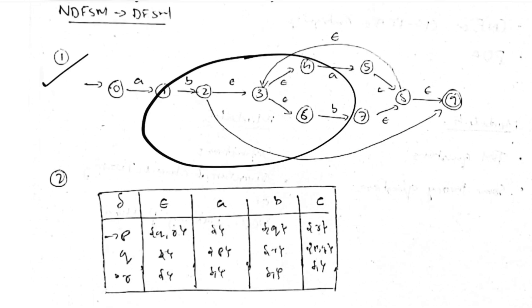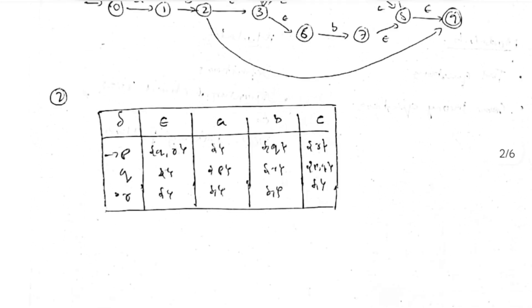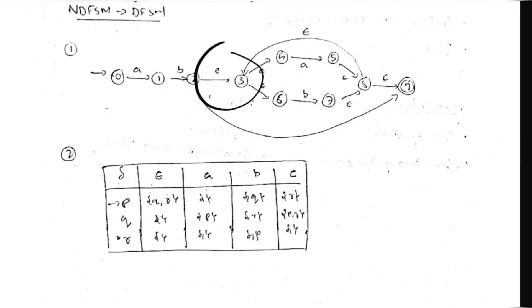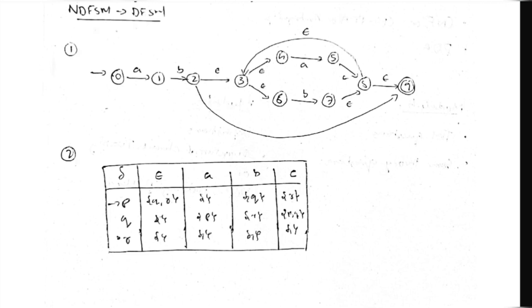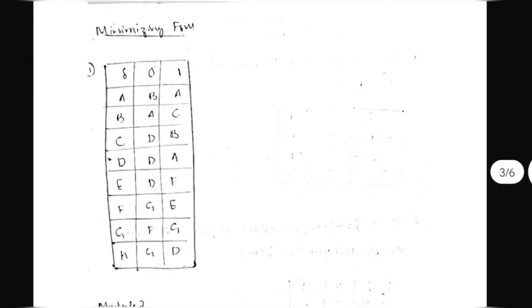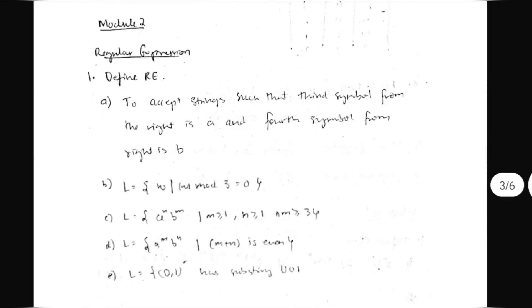For NDFSM-to-DFSM, I have explained all the questions and will provide links in the description box. The questions can be of two types: they will either give you a graph or a table — you need to know both. If they give a graph, know what to do; if they give a table, know what to do. The next important topic is minimizing FSM; most questions are asked in this format.